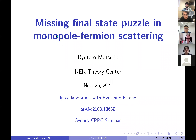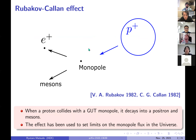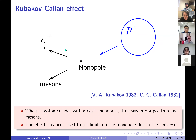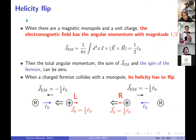Today I'd like to consider the monopole fermion scattering and its puzzle. Scattering of monopole and fermion has an interesting feature, such as the Callan-Rubakov effect. This effect appears in several GUT theories, for example, SU-5 GUT. According to this effect, when a proton collides with a GUT monopole, the proton decays into the positron and mesons. This effect is important in phenomenology because it can be used to set limits on the monopole flux in the universe. The origin of this effect is the helicity-flip property of the monopole fermion scattering.